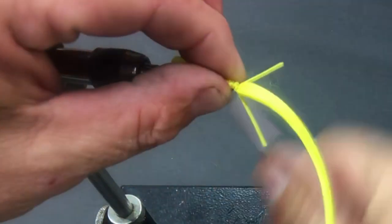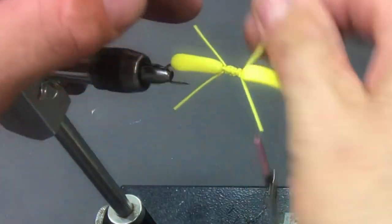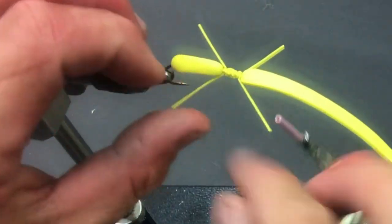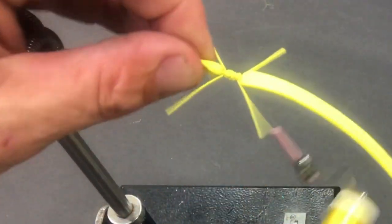Hate to harp on that, but that's critical. We worked on this fly for years. We tried it without that gap and it just doesn't work. We've got our legs in place, a nice body, a nice belly. Now we're gonna put the wing on.